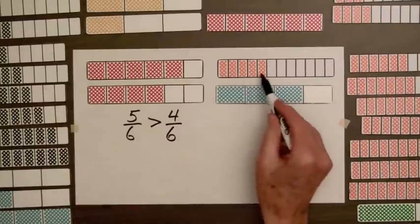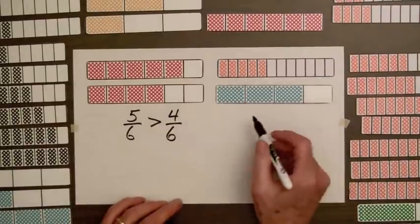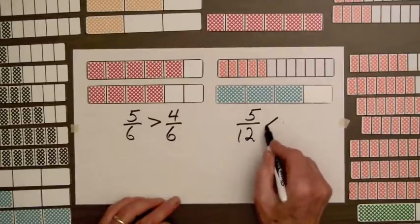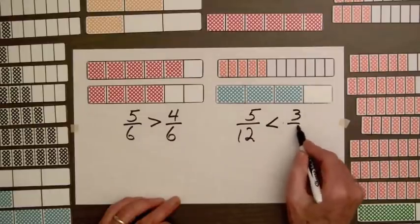And over here the top bar has less shading, so we've got five parts out of twelve, five-twelfths is less than three-fourths.